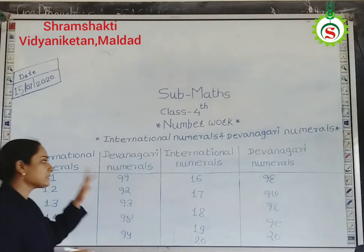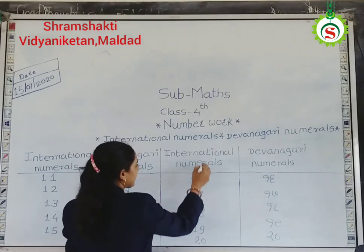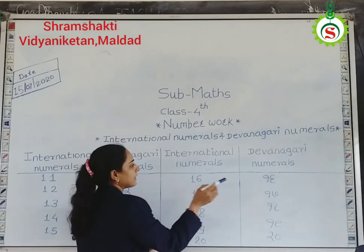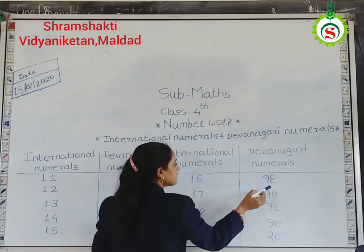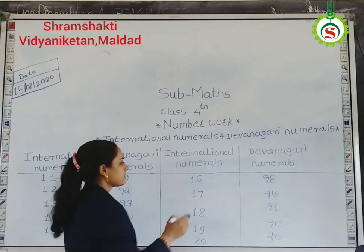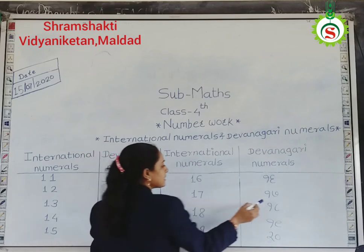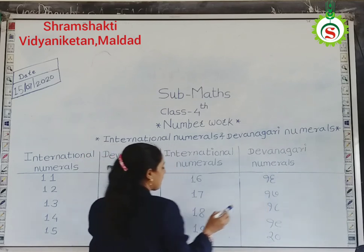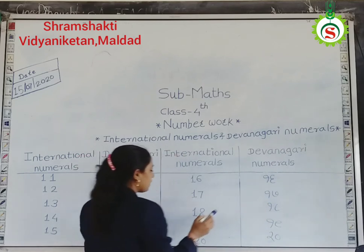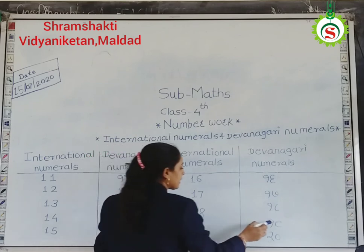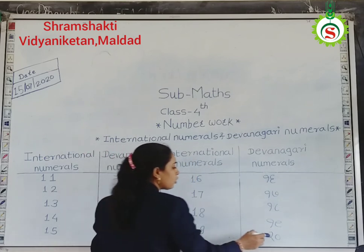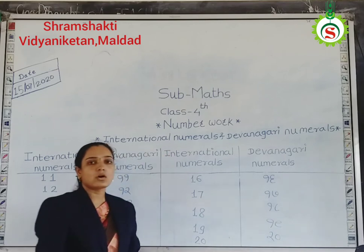Again some examples. In international numerals 16 and in Devanagari numerals it is called Sola. Then next: 17 — Sakra. 18 — Ardhara. 19 — Ekonabis. And 20 — Wins.